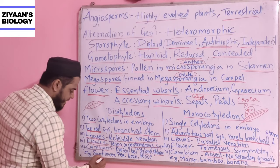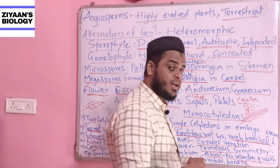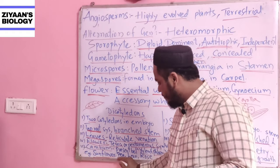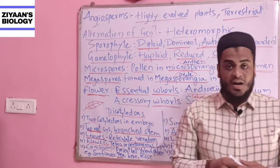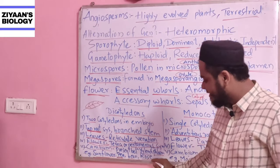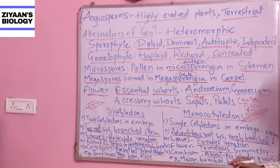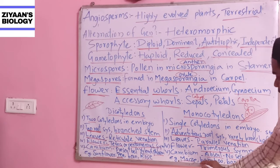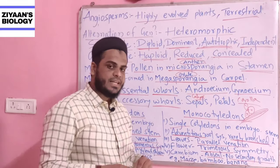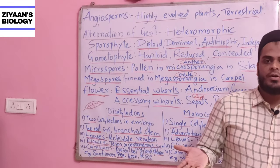Examples of dicotyledons include sunflower (Helianthus annuus), pea (Pisum sativum), bean, and rose (Rosa indica). Examples of monocotyledons include maize (Zea mays), bamboo, and banana. If you are preparing for competitive exams, you should know the examples of both dicotyledon and monocotyledon classes.